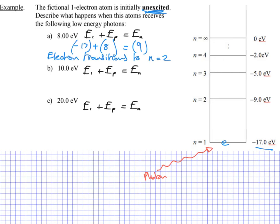So in A, with this 8 electron volt photon, we can say that the electron is transitioning to n2. It's got just enough energy to get up there.